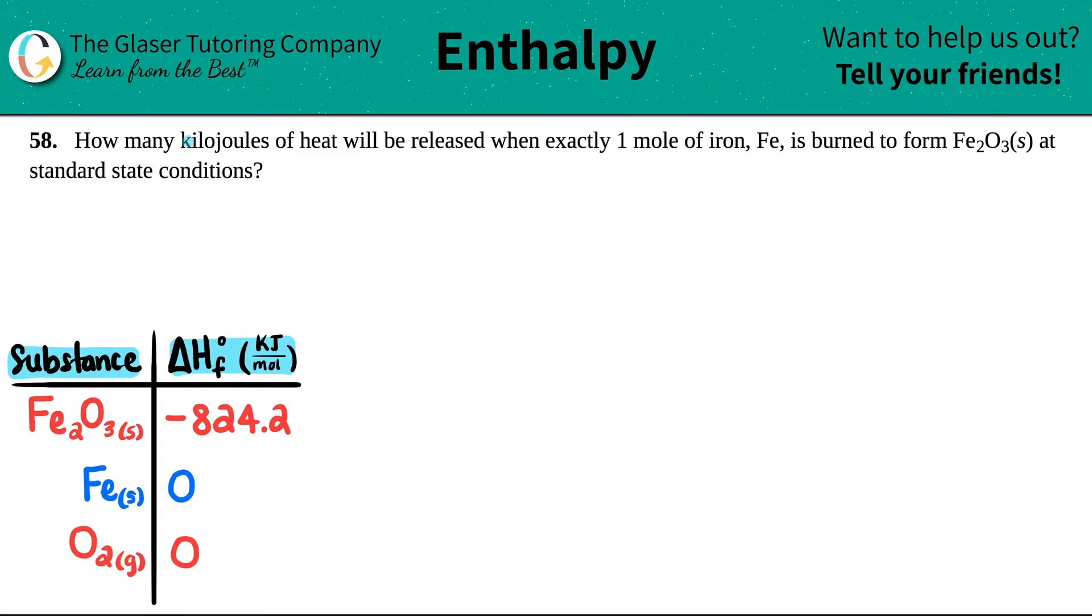How many kilojoules of heat will be released when exactly one mole of iron (Fe) is burned to form Fe2O3 solid at standard state conditions? We're talking about heat energy under standard state conditions, so this is enthalpy. Heat goes with enthalpy because the H in enthalpy links up with the H in heat, and both of these are delta H's. To do this problem, we always have to write a balanced equation first.